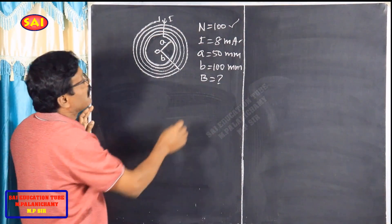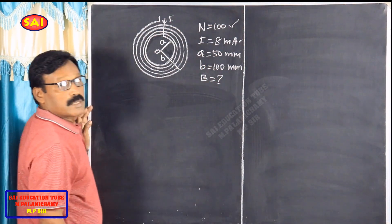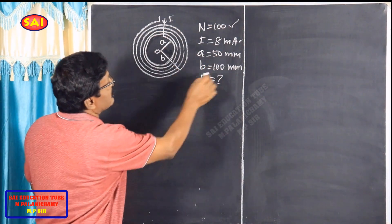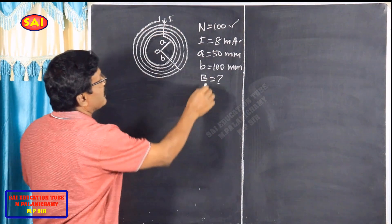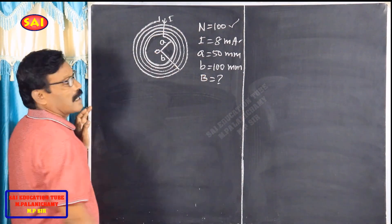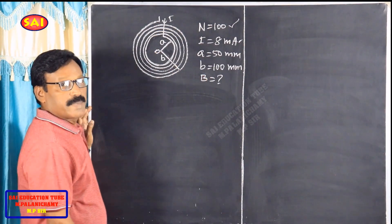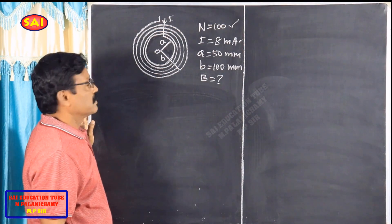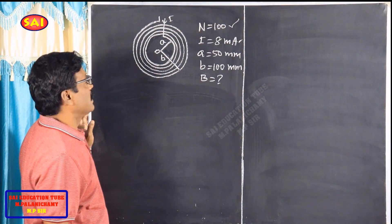I equal to 8 mA, a equal to 50 mm, b equal to 100 mm, N equal to 100 mm. Now, magnetic field at the centre.